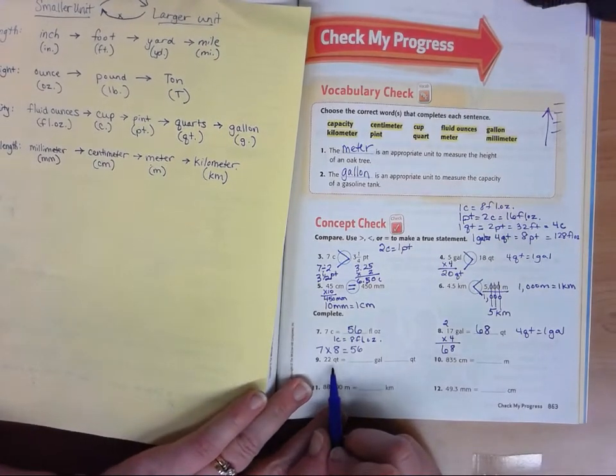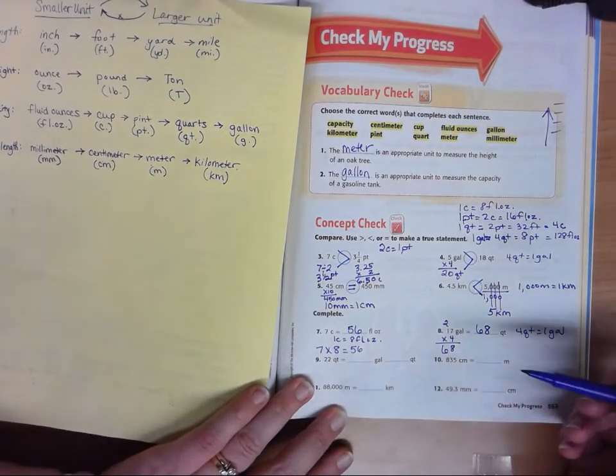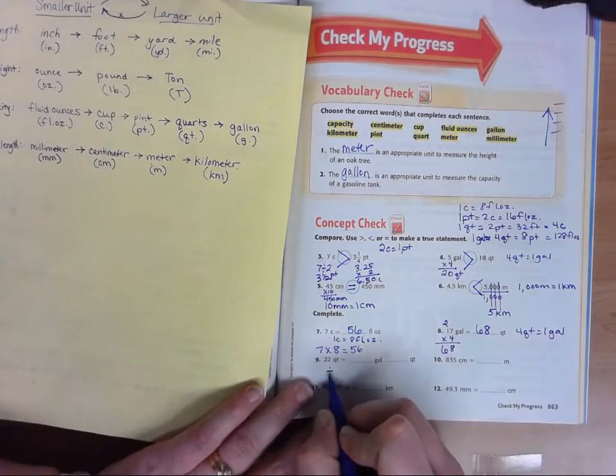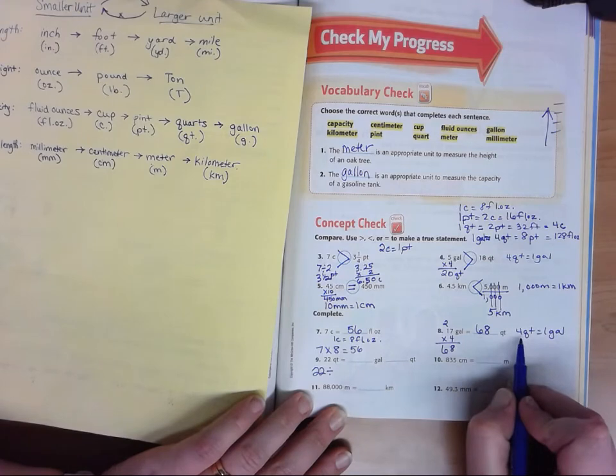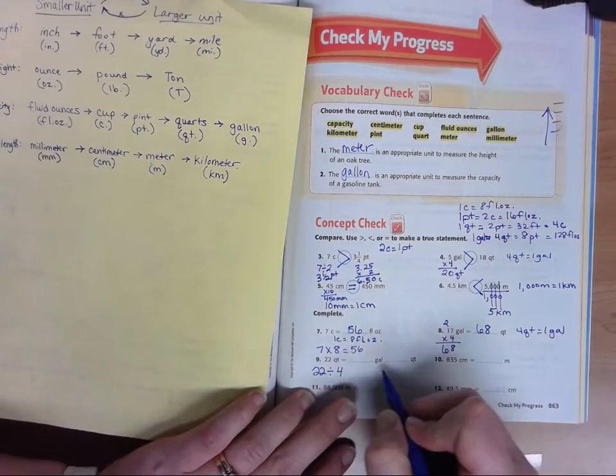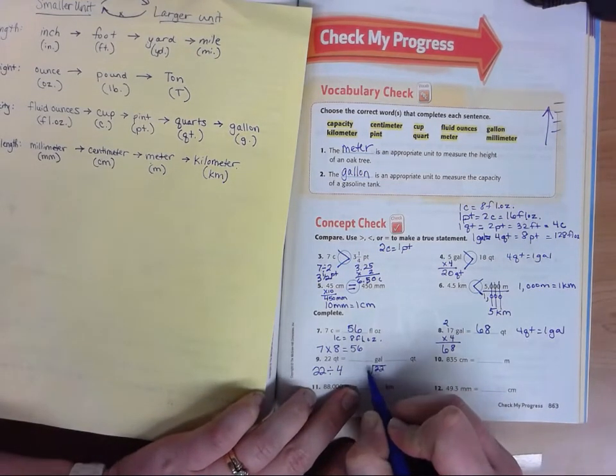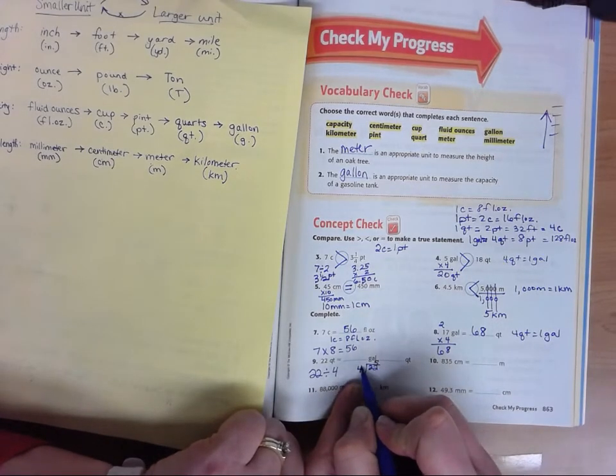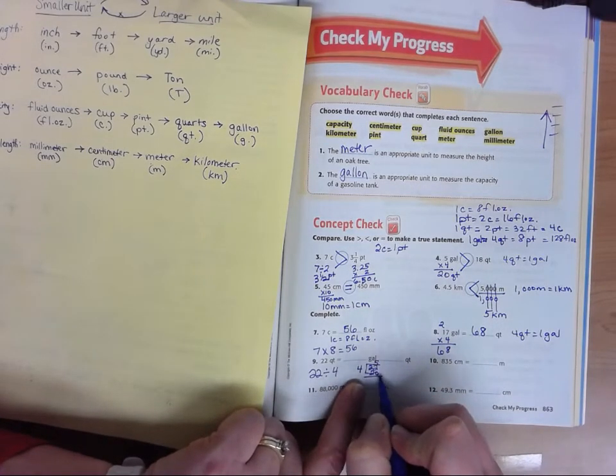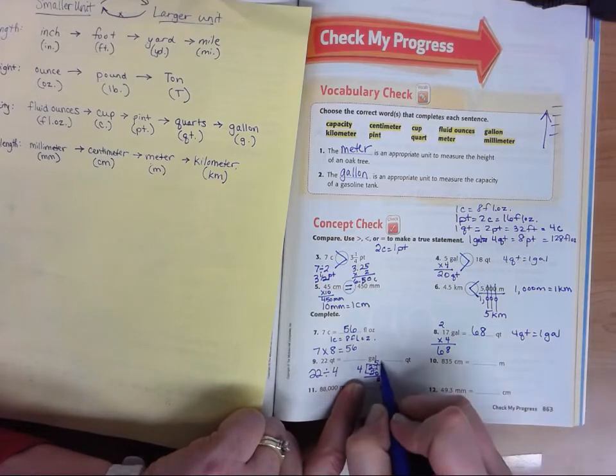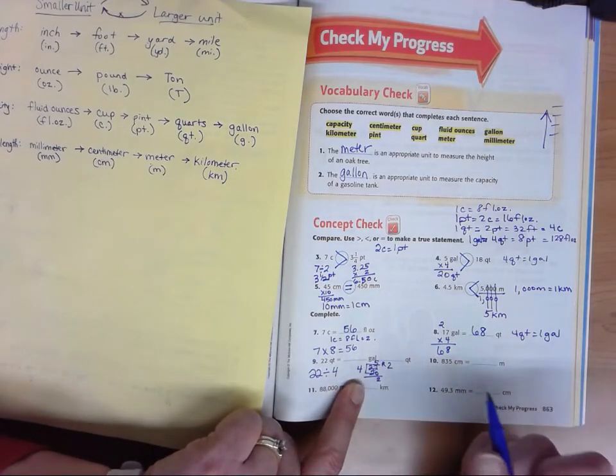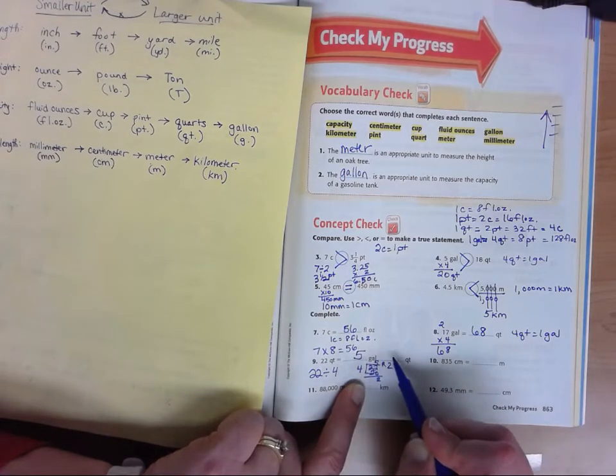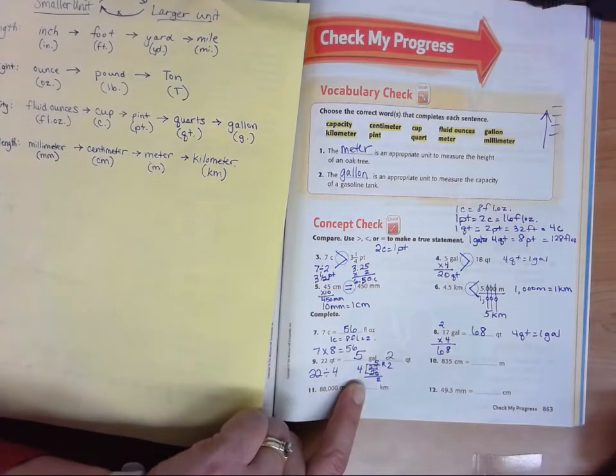If we look here, we're going to change quarts to gallons. Well, when we did gallons to quarts, we multiplied. So here we're going to divide. We're going to take 22 and divide by that four quarts in a gallon. If I do that, 22 divided by four, four goes into 22 five times. Five times four is 20. Take away. We're left with two. So we have five remainder two. To put that into my answer, that turns into five gallons and two quarts left over.